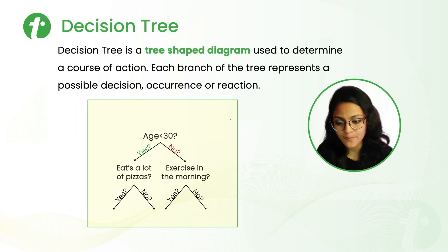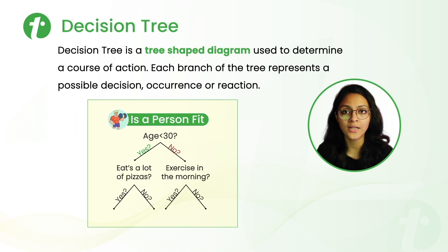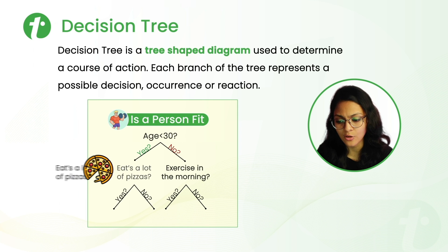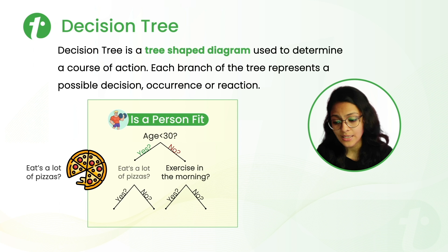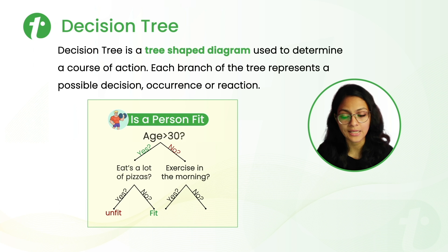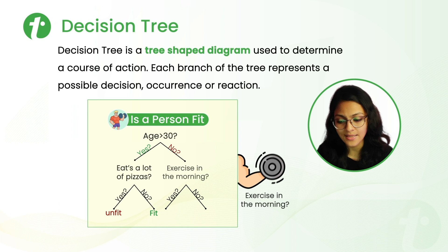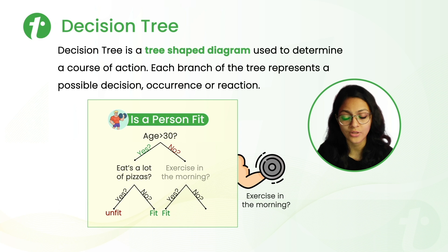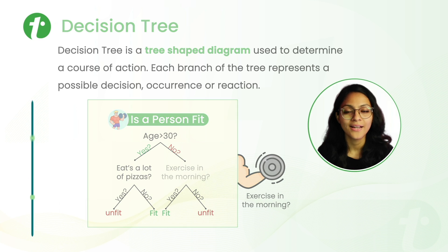In this, we have to predict whether the person is fit or not. So at the first stage, we are determining the age of the person. Whether it is less than 30 or more than 30. If it's less than 30, then does the person eat a lot of pizzas? If yes, then the person is unfit. And if no, then the person is fit. If the age of the person is greater than 30, then does the person exercise in the morning? If yes, then the person is fit. And if no, then the person is not fit.